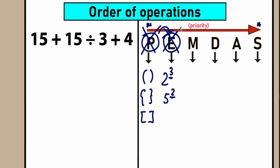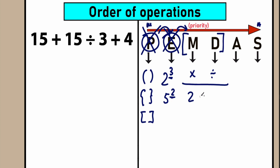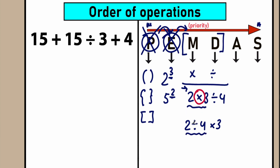The next step is a very tricky moment: M stands for multiplication and D stands for division, but these form one common group. We're not talking about multiplication first and division second — they are tied for priority. So if we have a mixture like 2 times 3 divided by 4, we do multiplication first because it comes first left to right. If we have 2 divided by 4 times 3, we do division first because division comes first left to right.